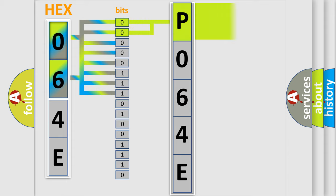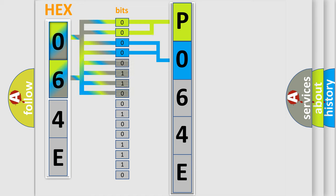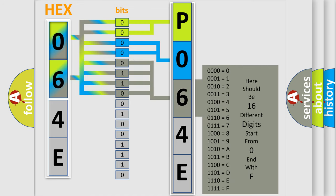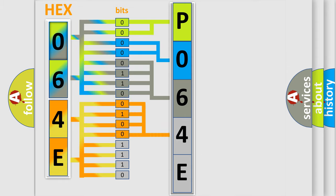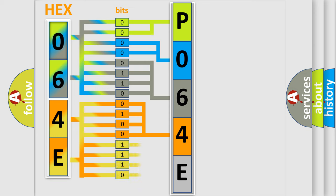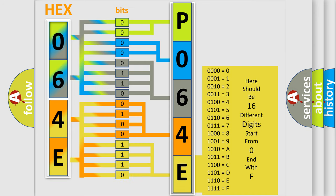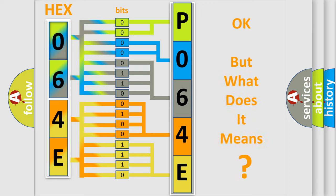By combining the first two bits, the basic character of the error code is expressed. The next two bits determine the second character. The last bits of the first byte define the third character of the code. The second byte is composed of a combination of eight bits — the first four bits determine the fourth character, and the last four bits define the fifth character. A single byte conceals 256 possible combinations. This is how the diagnostic tool translates received information into a more comprehensible format.